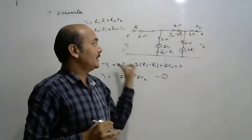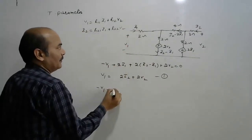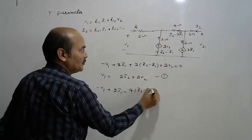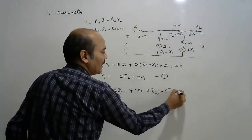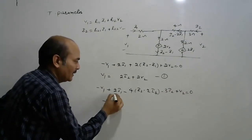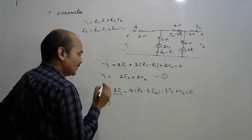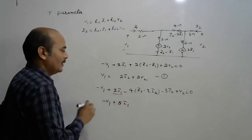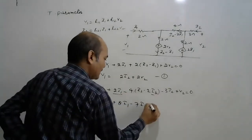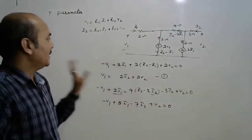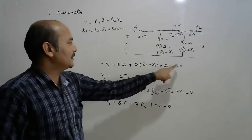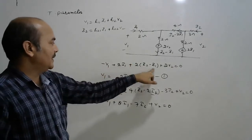Applying KVL around the outer loop: −V1 + 2·I1 − 4·(I2 − 2·I1) − 3·I2 + V2 = 0. Expanding: −V1 + 2·I1 + 8·I1 − 4·I2 − 3·I2 + V2 = 0, which gives V1 = 10·I1 − 7·I2 + V2. This is equation number 2.